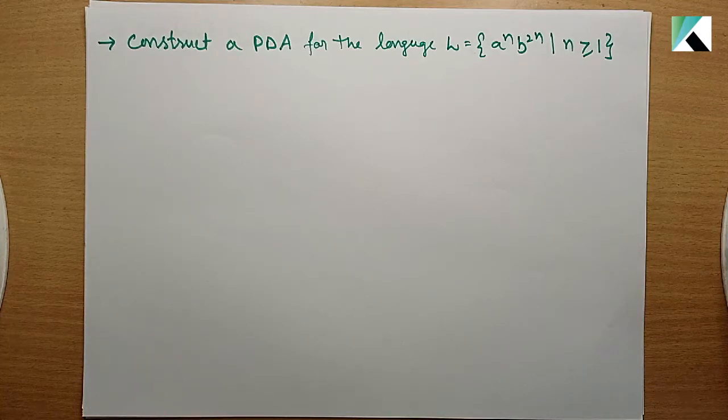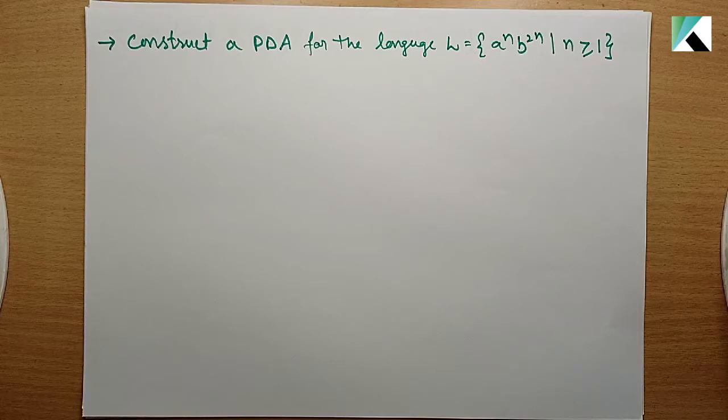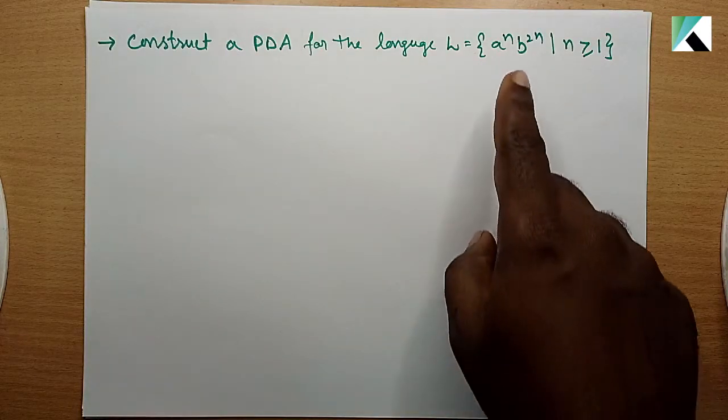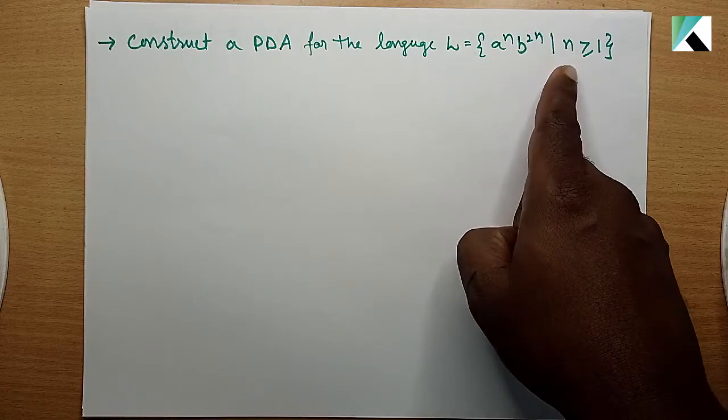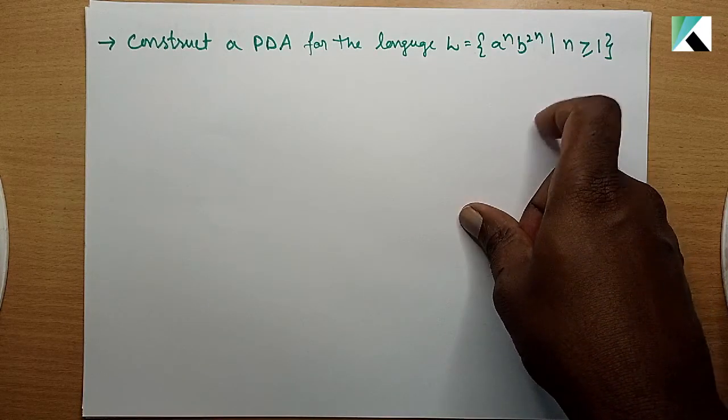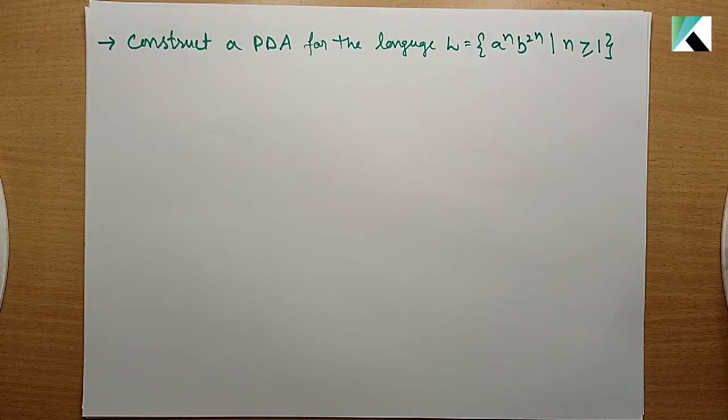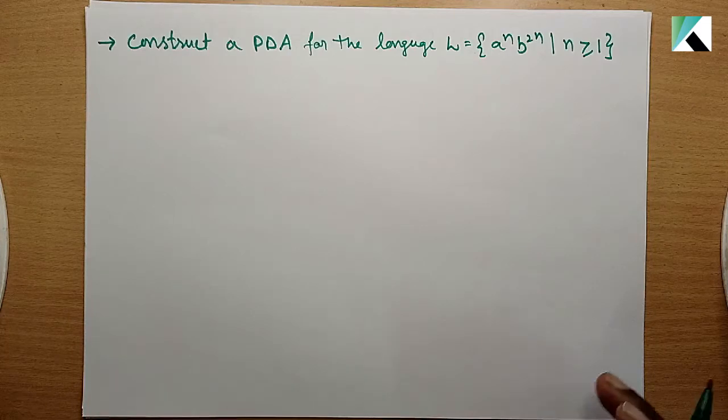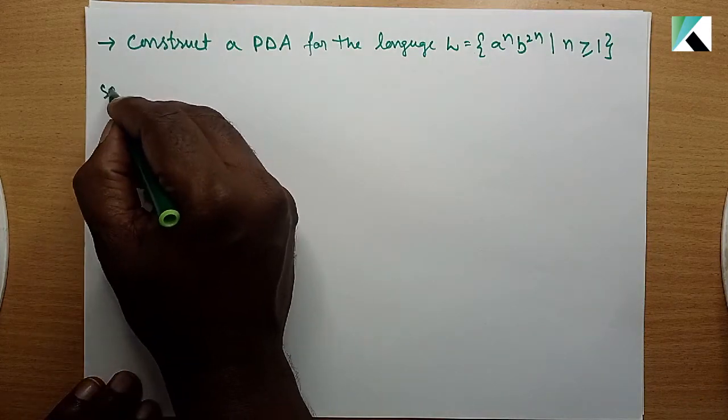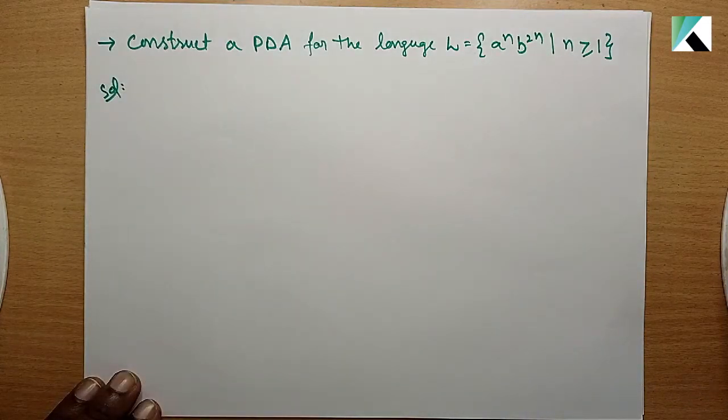Welcome to Karnakar tutorials. Today we discuss one more problem related to the PDA. The given language is a power n b power 2n, n greater than or equals to 1. There is no chance of epsilon, so here first you have to write the language in the solution.